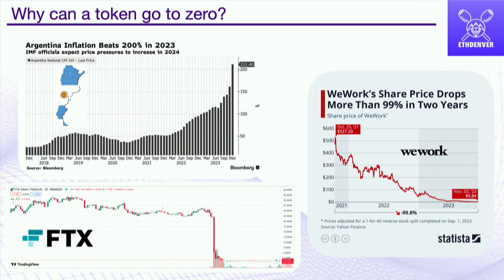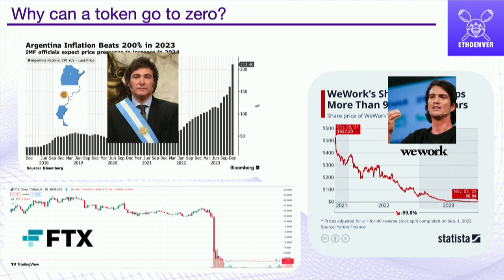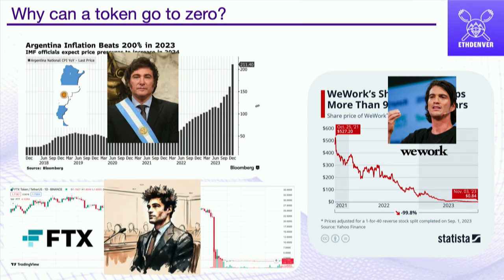Whenever these dynamics happen, people respond and try to fix it. In Argentina, one way to solve this is to hire a new politician with wild ideas. In the case of WeWork, you might bring back the same person who led the token to zero. In the case of FTX, you could hire a good-looking version of SBF and have him restart FTX. Response to the change in value of currencies, stocks, or tokens is typically dealt with in the real world — you change who's at the head and hopefully reach a better stage.